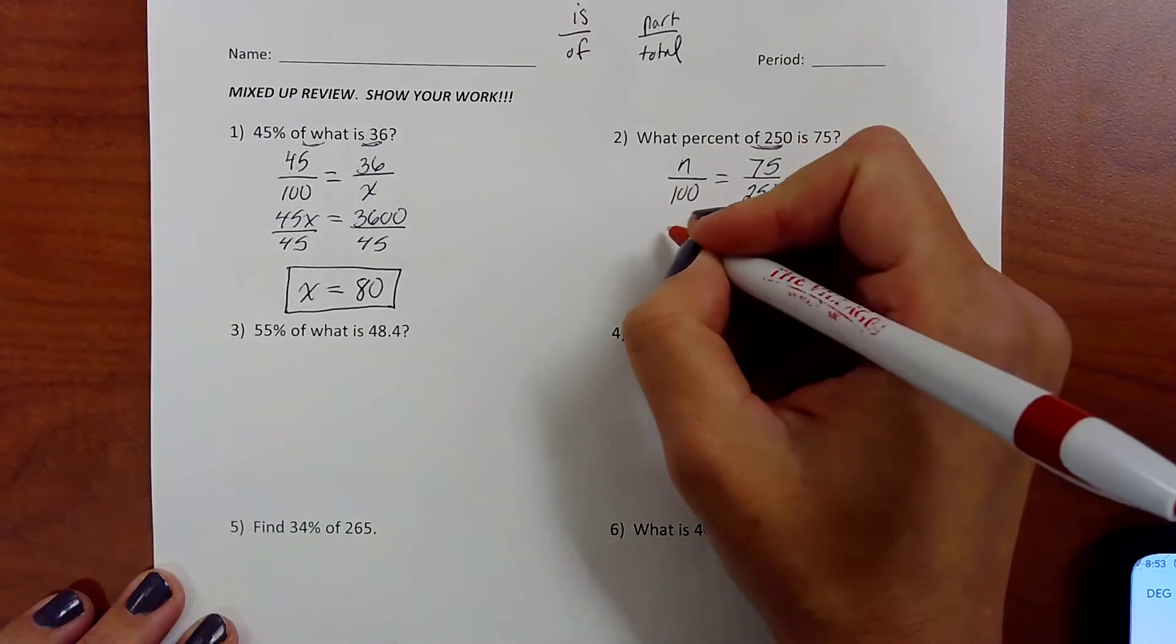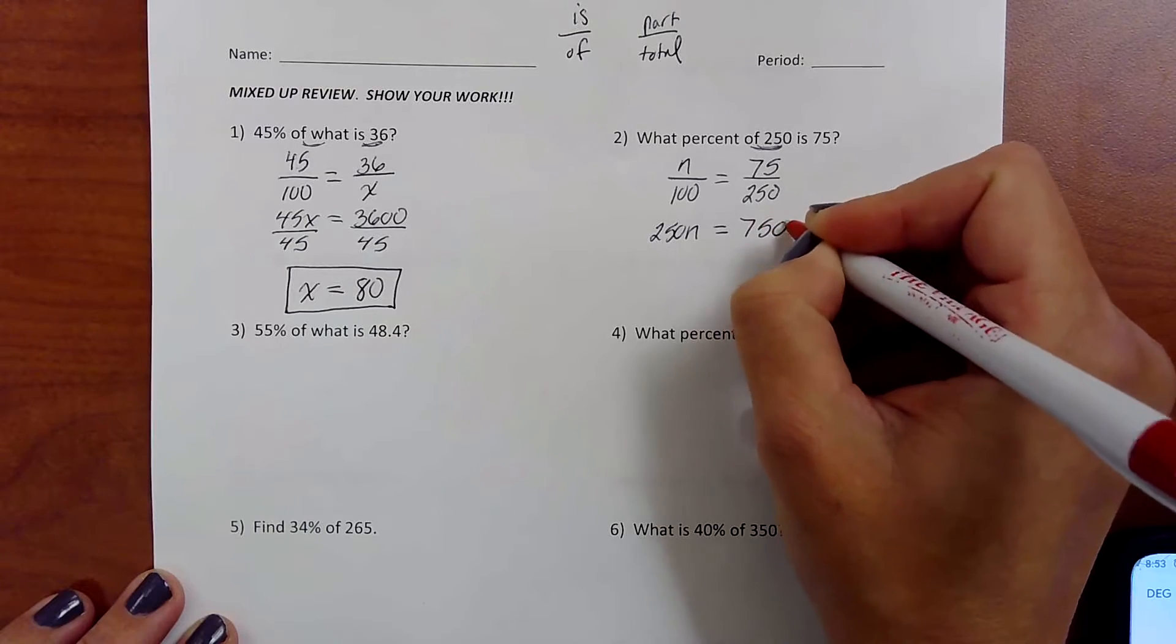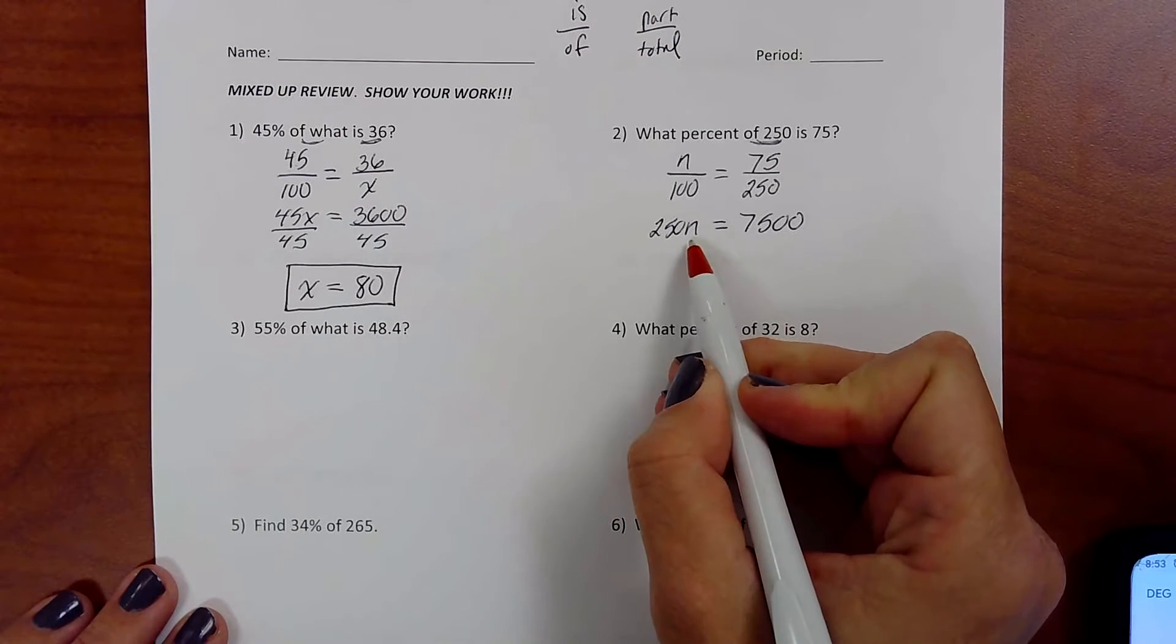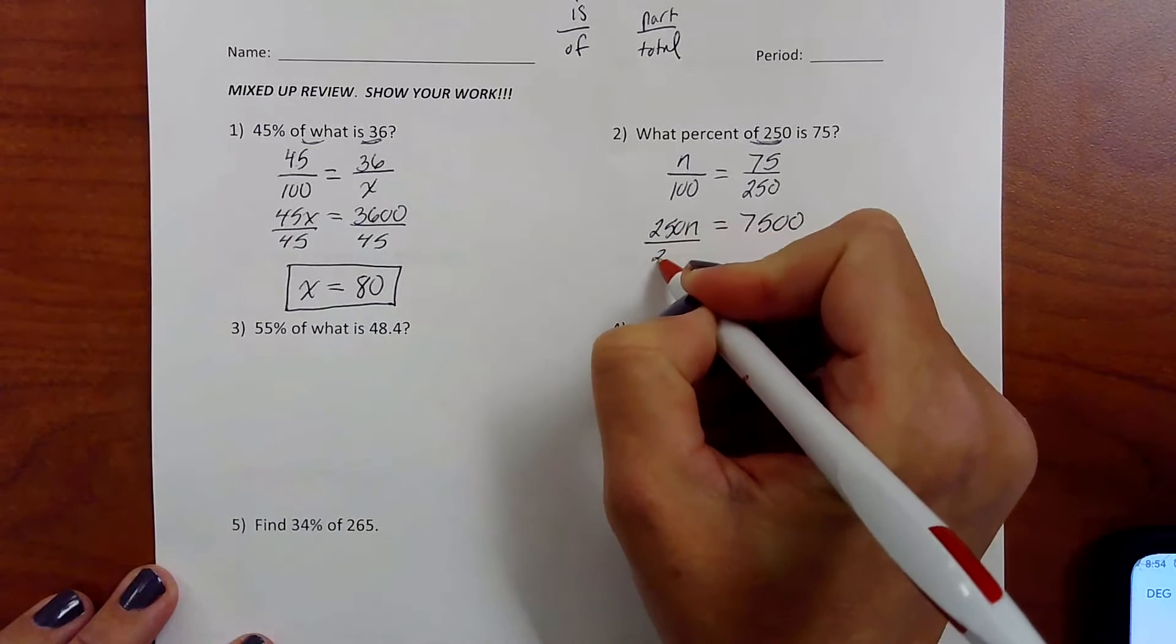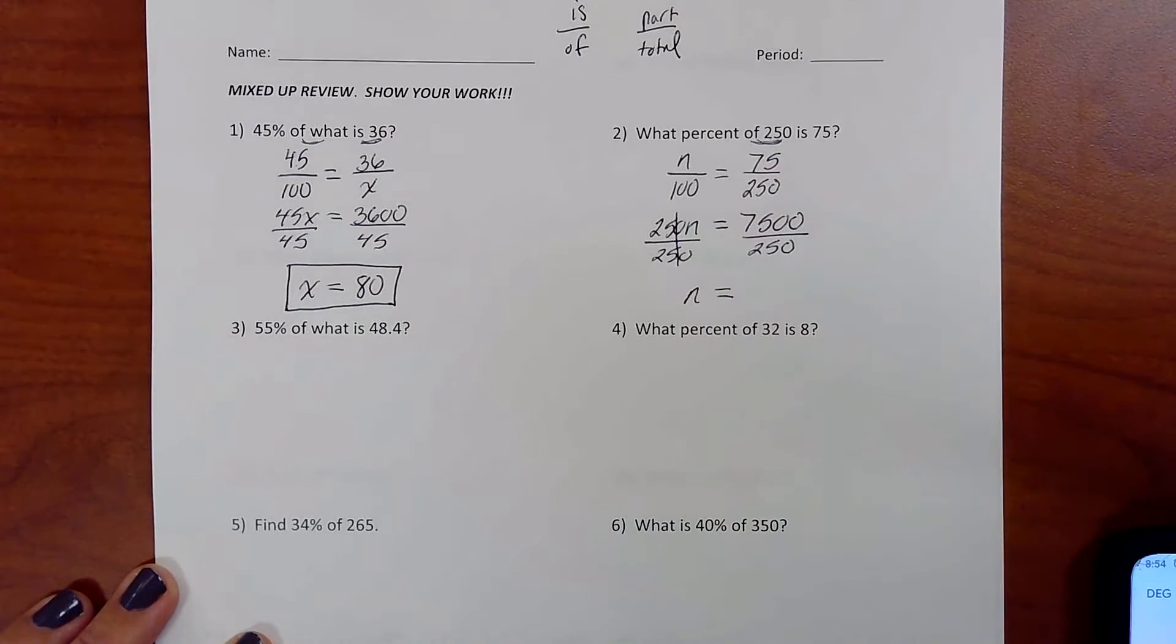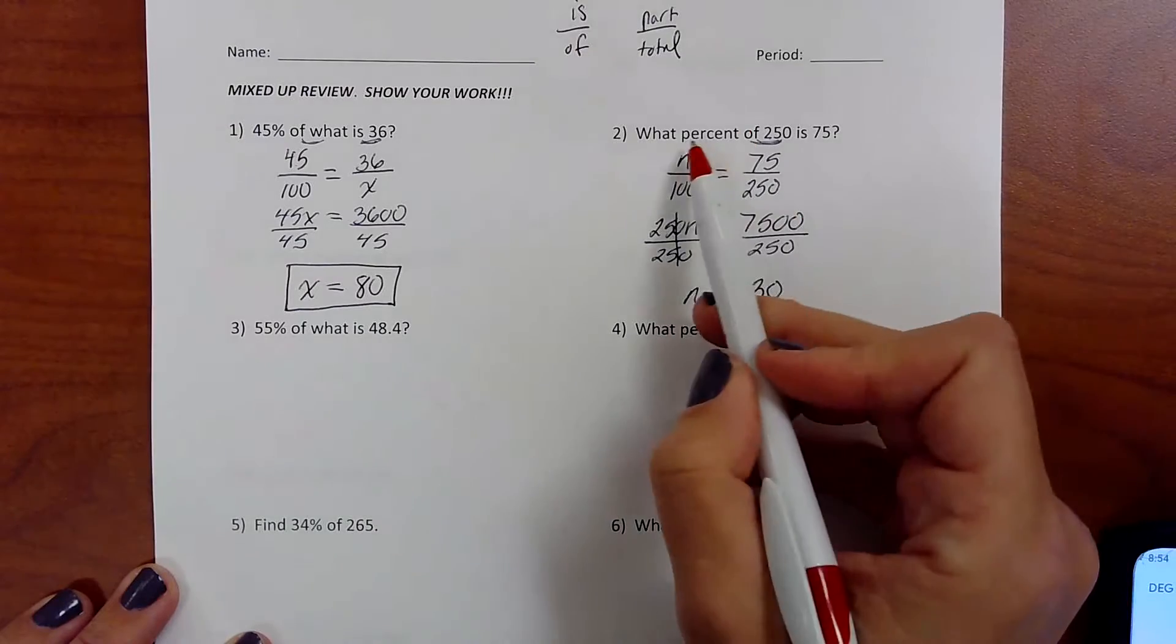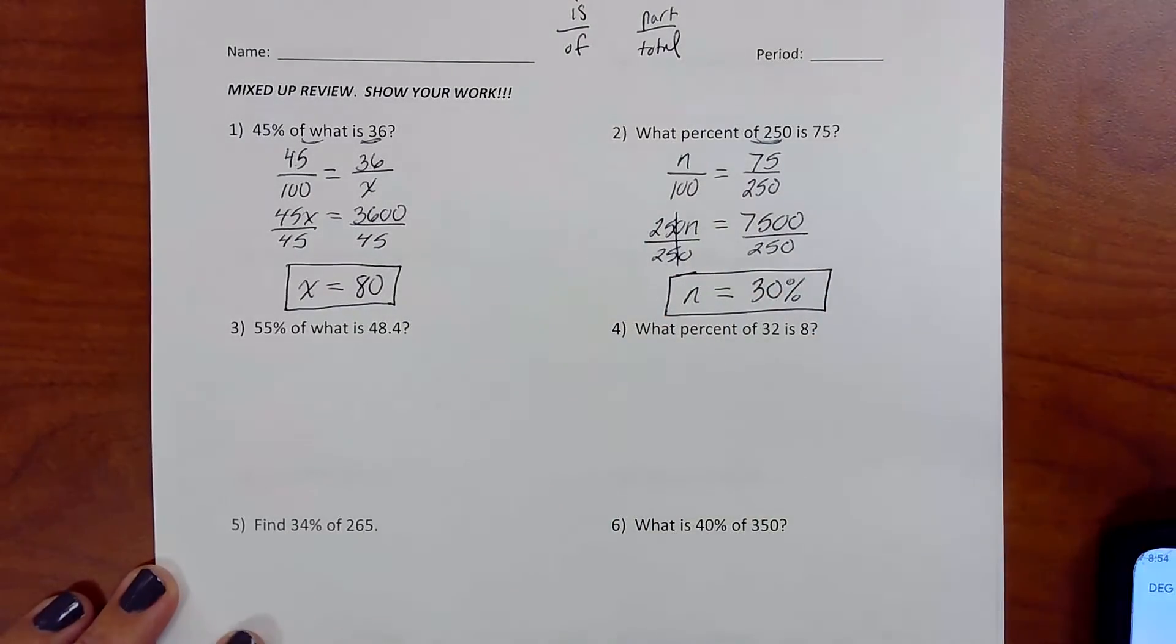So 250 times n, 250n. 100 times 75, 7,500. Now try to stay a little ahead of me. What would you do next to get n by itself? Hopefully you're saying you're going to divide by what's next to it. So divide by the 250. That gets n by itself. And then type in your calculator. 7,500 divided by 250. I got 30. Remember on this one, we were looking for a percent. So this answer is 30 percent.